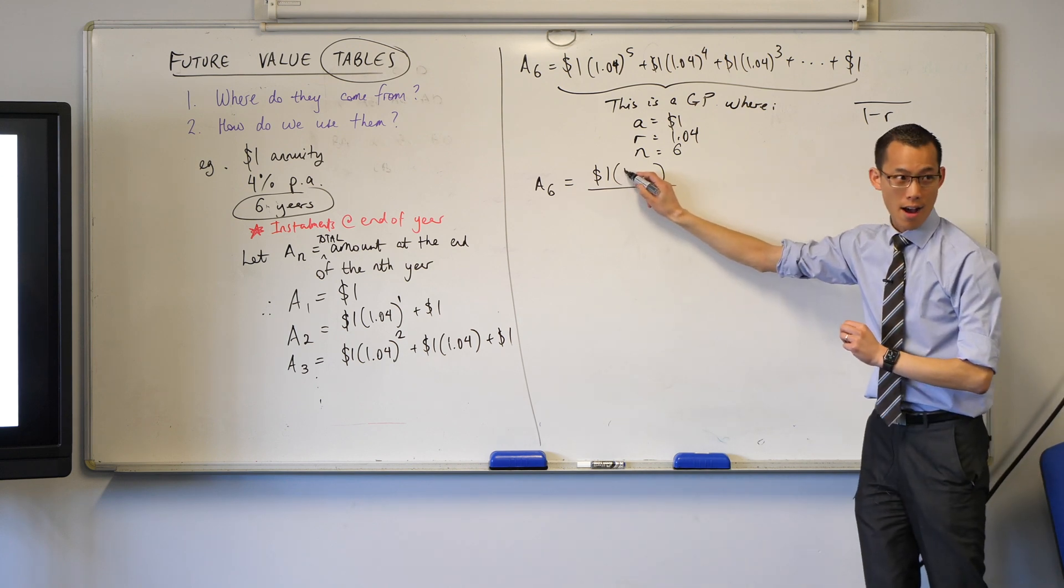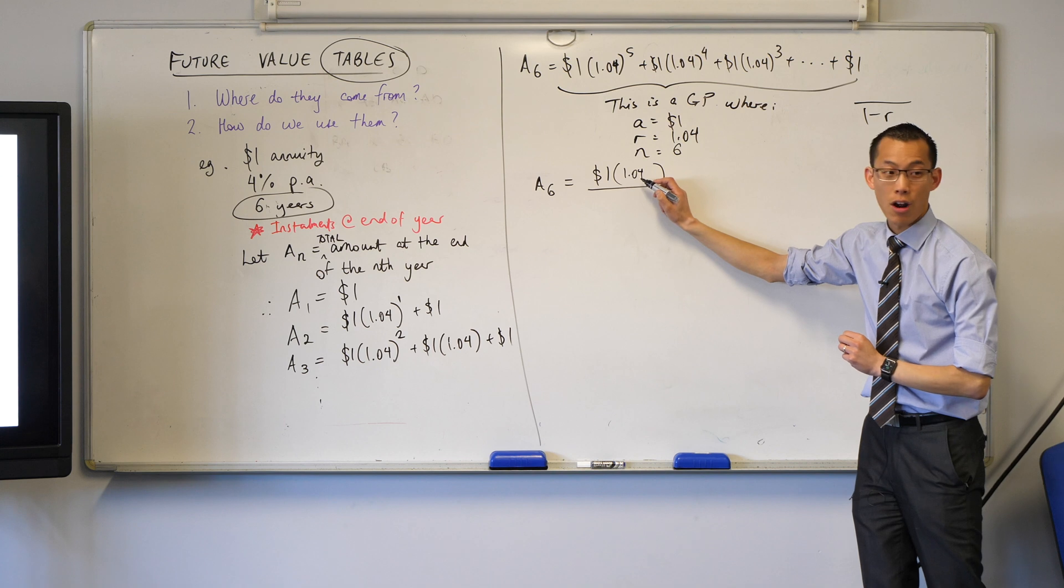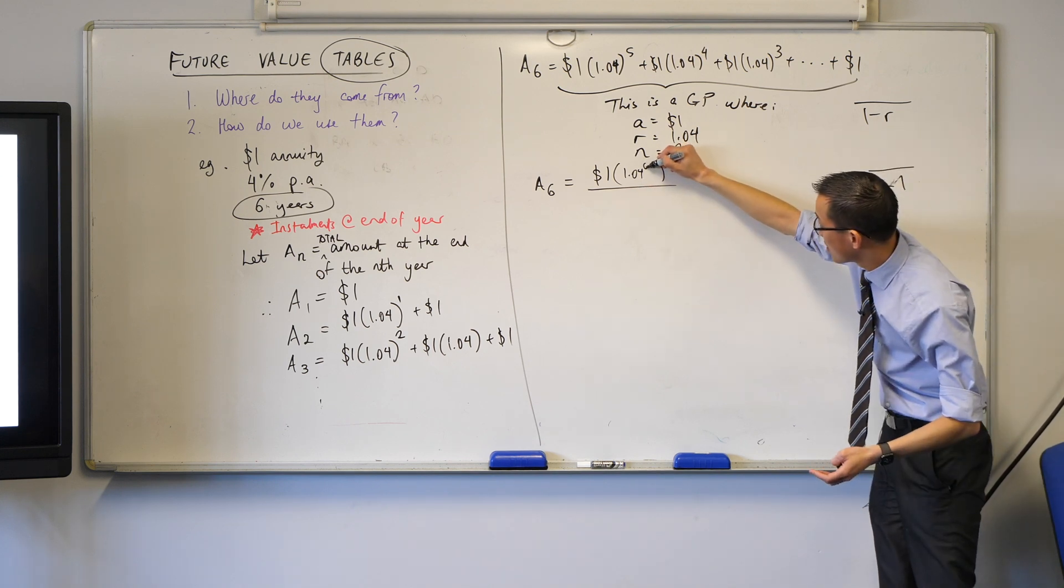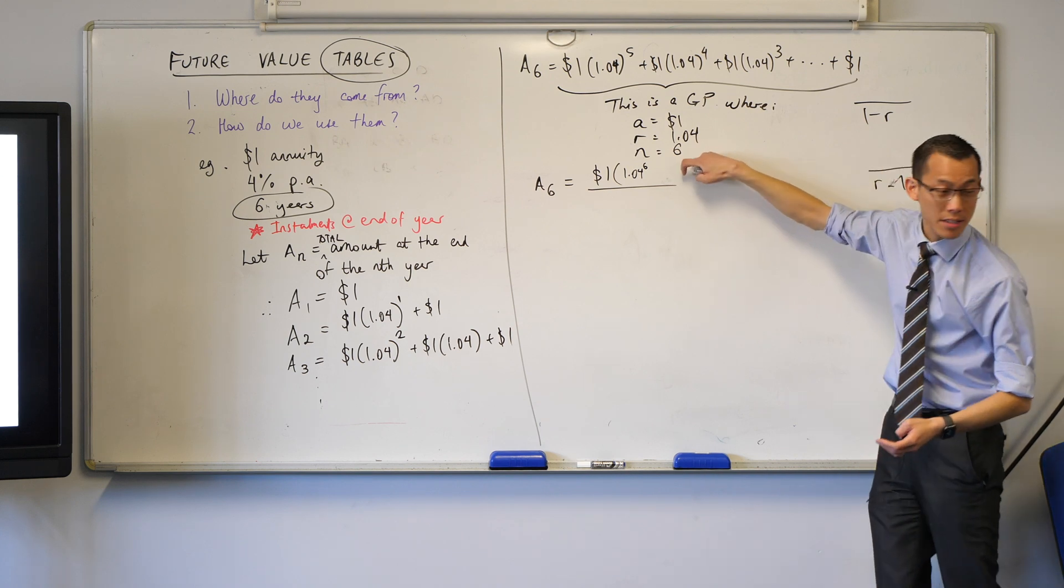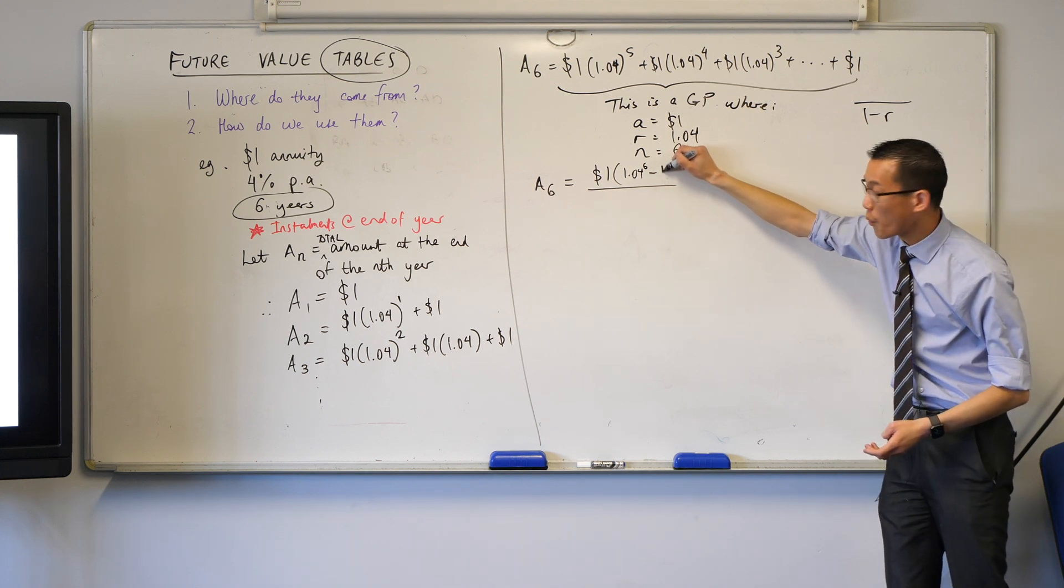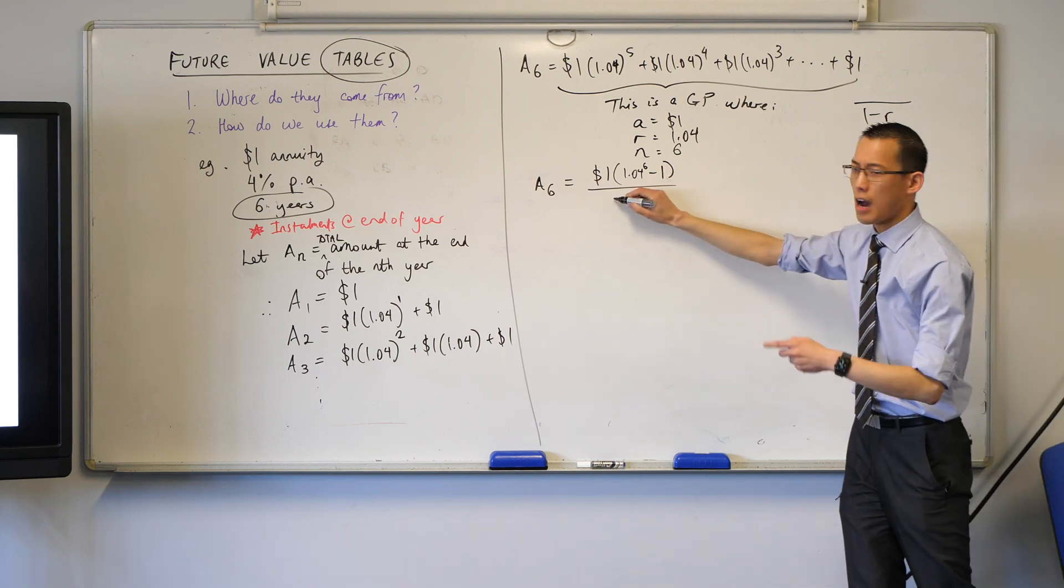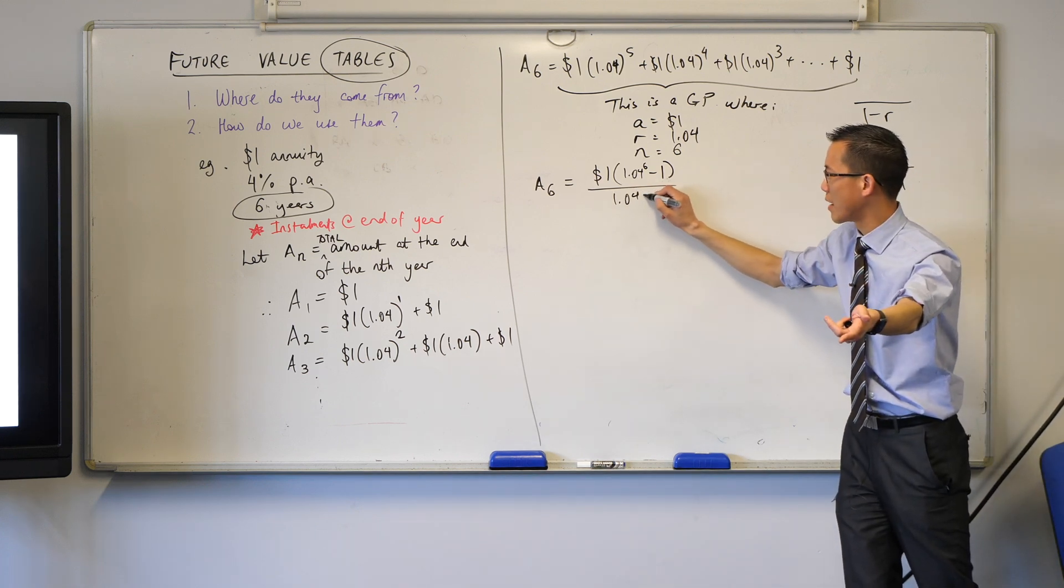Okay. So therefore I've got R, there it is, to the power of N, which in this case is 6. Sorry, I didn't leave myself enough space. There's R to the N. Take away 1. And then what's on the bottom? This guy, right? Yeah. 0.04 is what you'll get, but let's just write in this step.